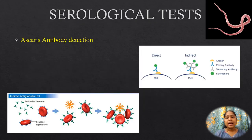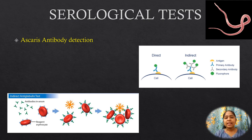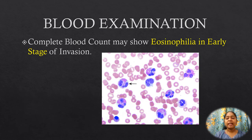Serological tests. Ascaris antibodies can be detected by indirect hemagglutination, indirect fluorescent antibody test, and enzyme-linked immunosorbent assay (ELISA). Serodiagnosis is helpful in extra-intestinal Ascariasis such as Löffler syndrome. Blood examination: a complete blood count may show eosinophilia in the early stage of invasion.